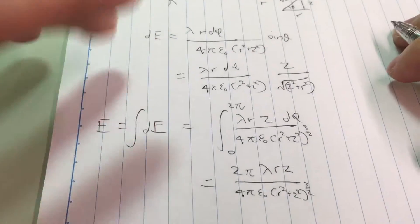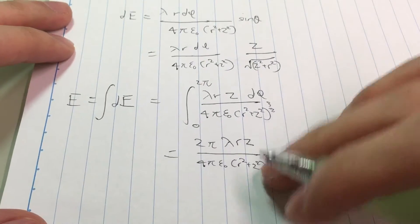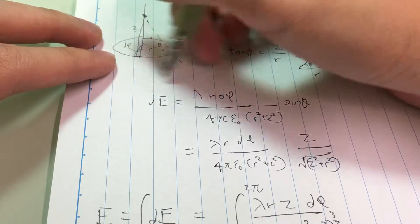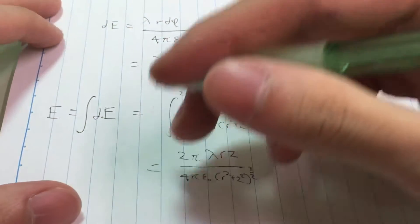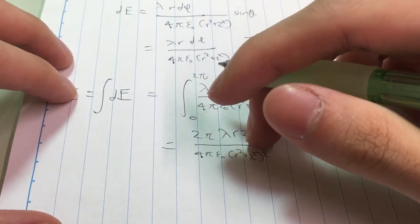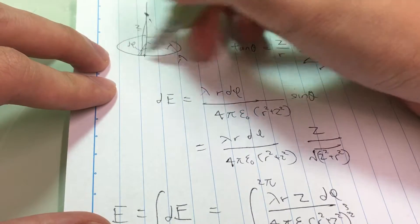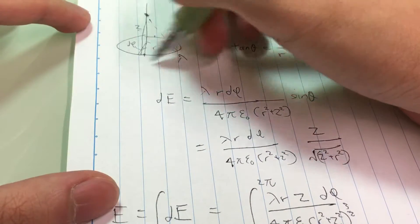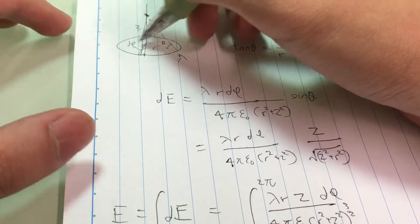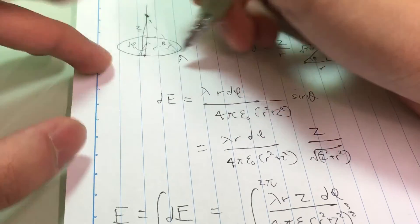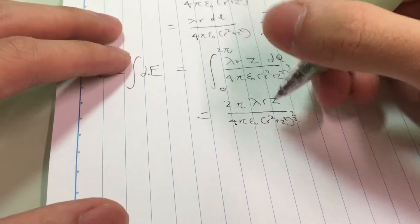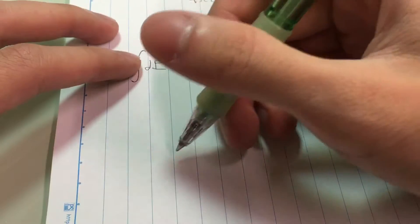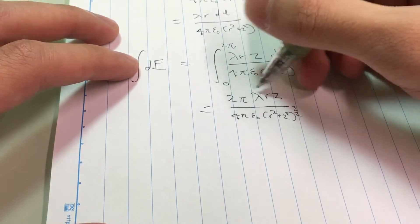Another interesting problem to consider is what happens if this isn't just a hoop but a circular plate. What we have to do then is to integrate this electric field with respect to dr, because this is just a hoop. If we're considering a plate, we'll have to add up infinite amount of these tiny hoops into one giant plate. We'll have to divide this charge density into a surface charge density. This is just a line charge density.